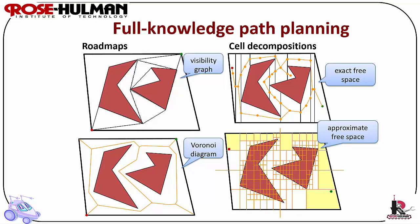Full Knowledge Path Planning: There are several C spaces that afford topological navigation. These C spaces are visibility graphs, exact free space, Voronoi diagram, and approximate free space.